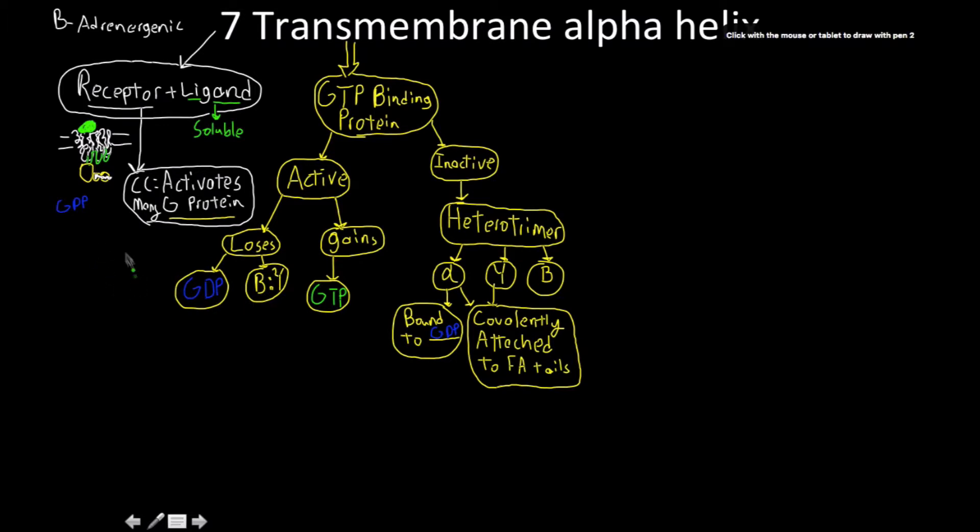And then the binding of GTP causes a conformational change that results in the loss of the beta-gamma subunit. So we have just the G alpha subunit here, and on one side of it, we have GTP bound, and on the other side of it, we have another site or site for activity where the beta and gamma subunit used to be. The point that I'm making is it's not that the GTP binds where the beta-gamma was, the GTP binds where the GDP was.